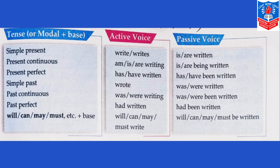For present perfect tense, if 'has/have written' is given, we will make it 'has/have been written' in passive. For simple past tense, if 'wrote' is written, we will make it 'was or were written' in passive voice. For past continuous tense, if 'was/were writing' is given in active, we will write it as 'was or were being written' in passive. For past perfect tense, if the verb is 'had written', we will make it 'had been written' in passive voice.